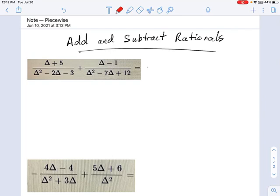So I want to pick up with adding and subtracting rationals with two examples that are just a little bit more challenging. And there's nothing new here in concepts, but we just need to be careful about our factoring.